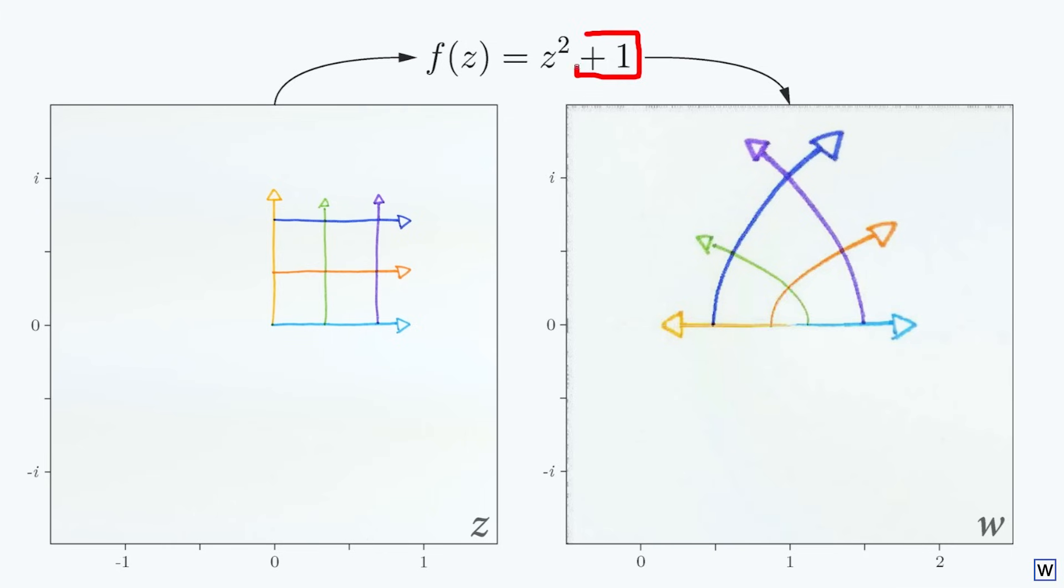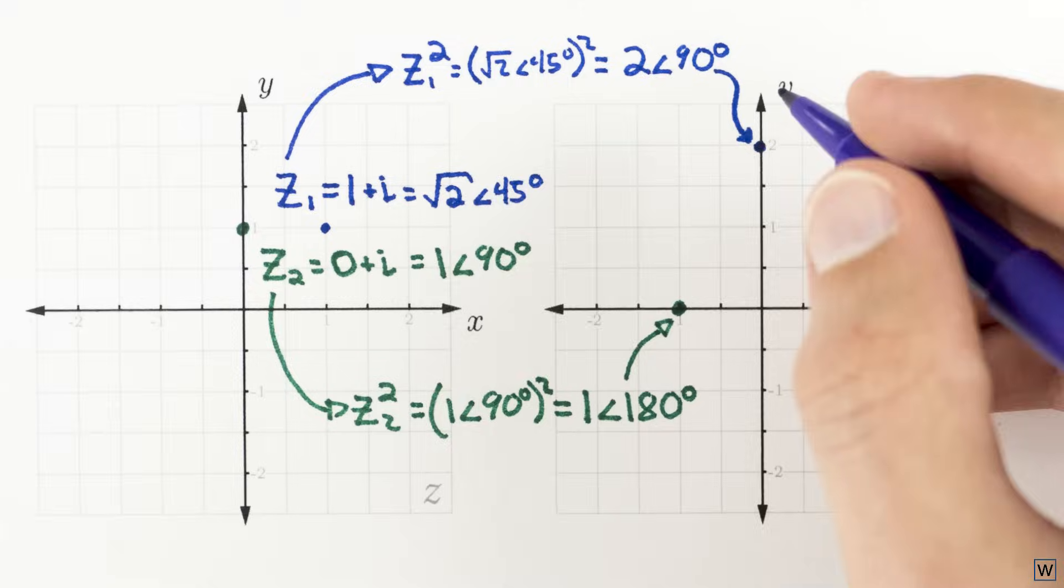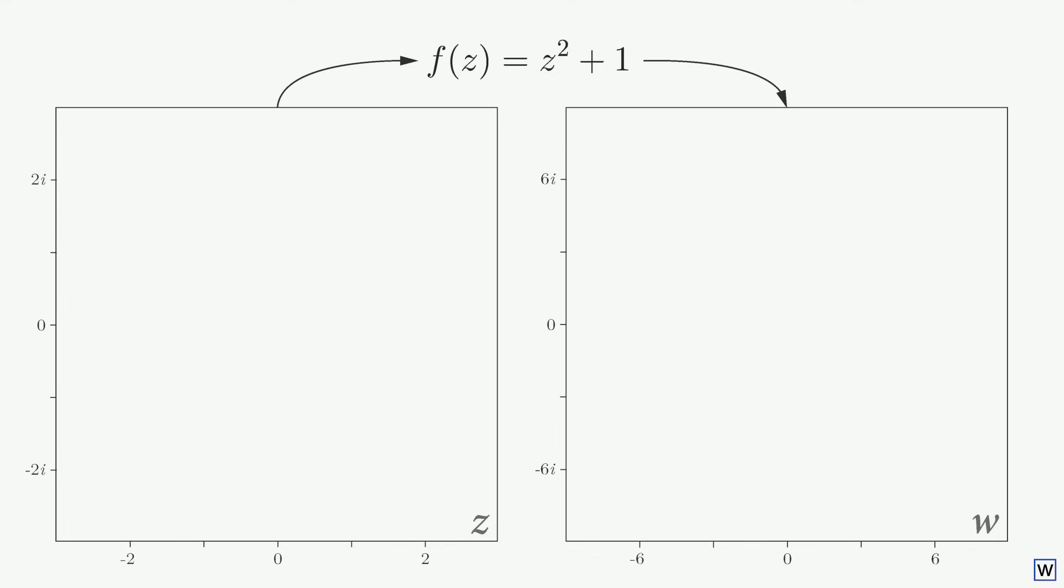The plus 1 portion of our equation is a little less exciting. Adding a positive real number will move all of our points in the positive real direction, so to the right in this case, by 1. Since this shift to the right doesn't affect the behavior we're interested in, we'll leave it out of the equation for now.